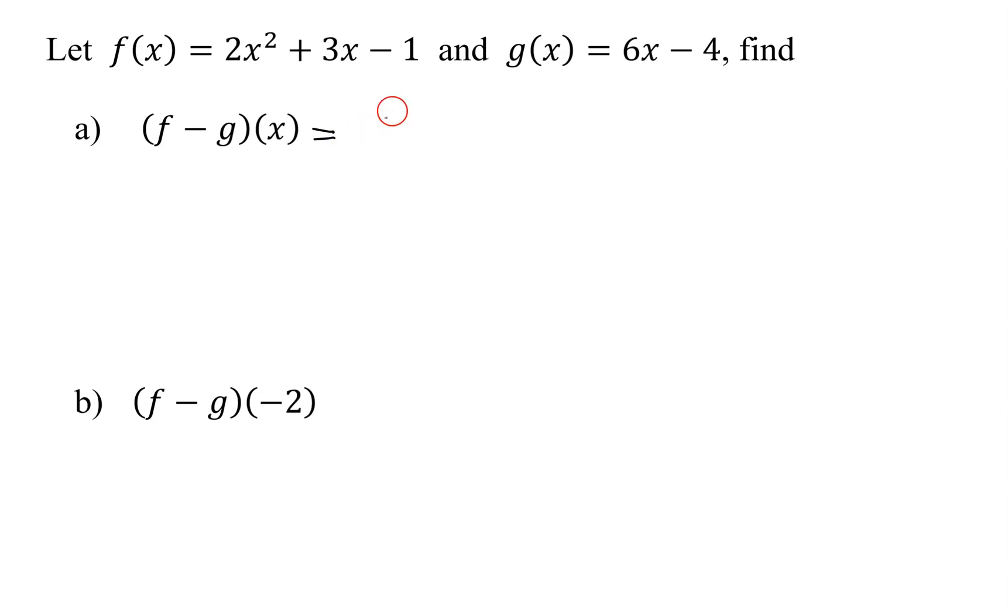(f - g)(x) is defined to be f(x) - g(x). So basically now all we have to do is substitute this expression in for f(x). So instead of f(x) I'm going to write 2x² + 3x - 1.